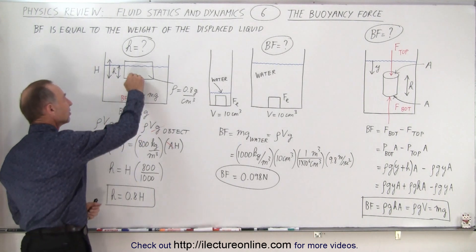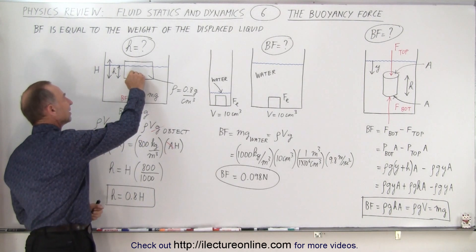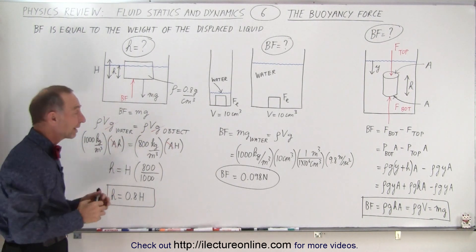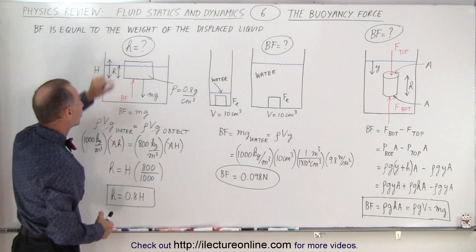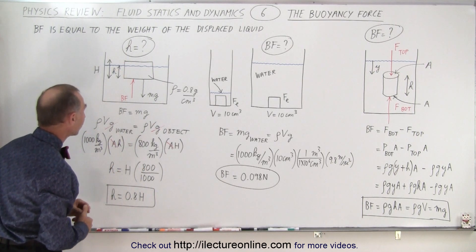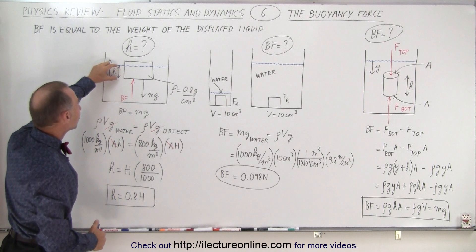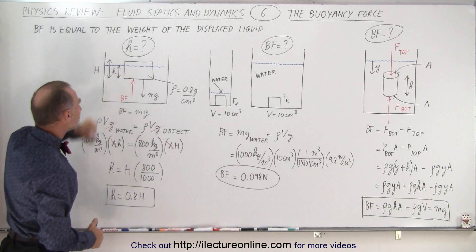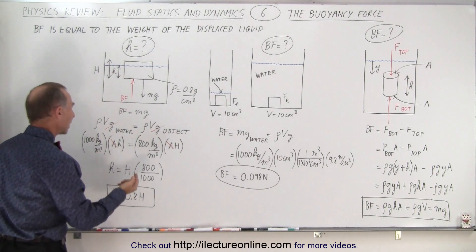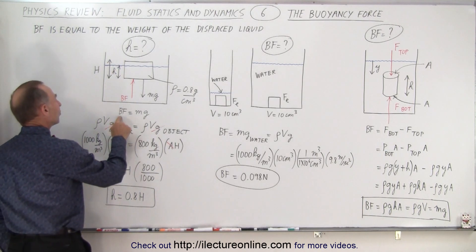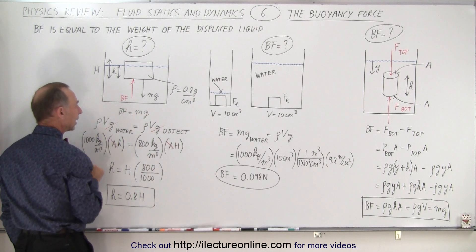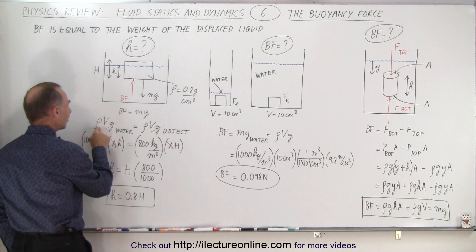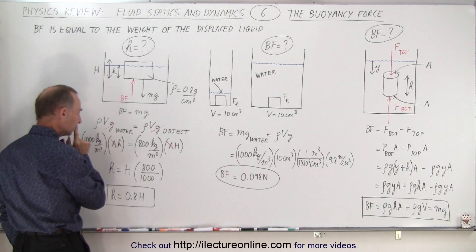What if the density of the object is not as dense as the liquid you place it in? It will then float, and part of the object will be above the water line. To find how much will be below the water line, we say that the buoyancy force equals the weight of the displaced liquid — that is, the density times the volume times acceleration due to gravity of the liquid.